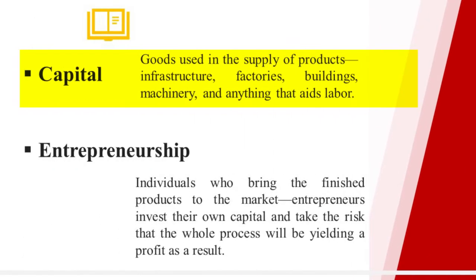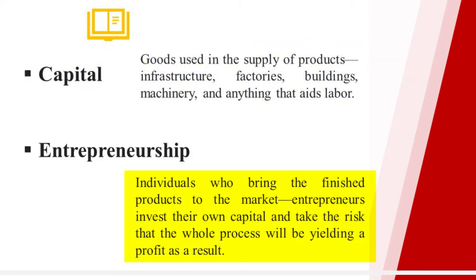Capital goods are those goods used in the supply of products: infrastructure, factories, buildings, machinery, and any other aids that will lead to the final product of the manufacturing process. Entrepreneurship — these are individuals who bring the finished products to the market. Entrepreneurs invest their own capital and take the risk that the whole process will be yielding a profit at the end result.